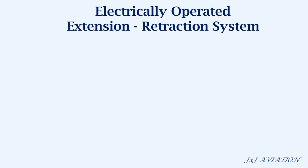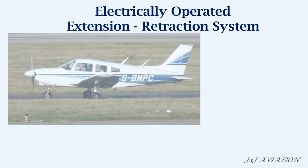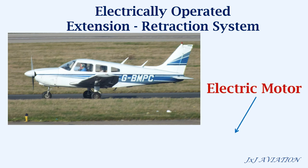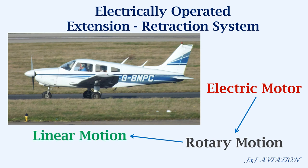First, we will look at an electrically operated extension and retraction system. This system is installed on some small lightweight aircraft. The electric motor produces a rotary motion that has to be converted into a linear motion. This linear motion is connected to the landing gear so that it can be extended or retracted.